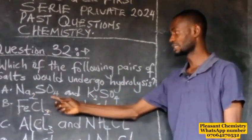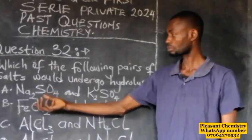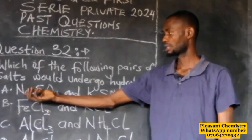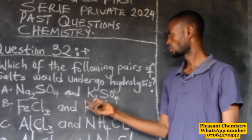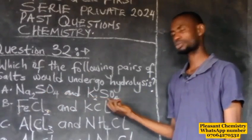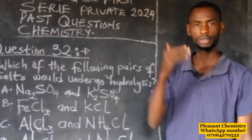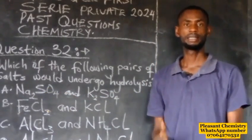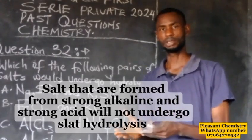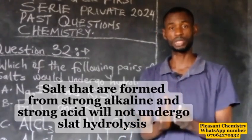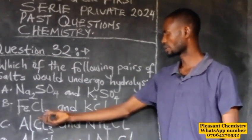Both of those salts are formed from a strong alkali and a strong acid. Salts formed from a strong acid and a strong alkali will not undergo hydrolysis — they will be neutral to litmus paper. Let's check the second pair.